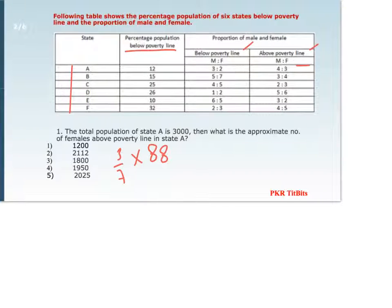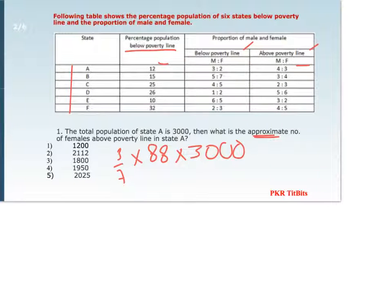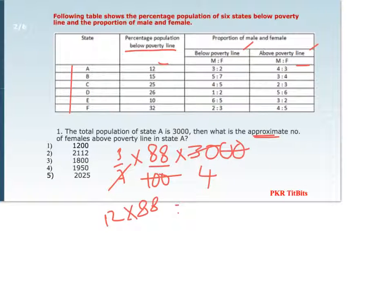This 88% we get from 100 minus 12%. So 88% of 3000. Since we want to calculate the approximate value, we take it as 88 divided by 100, removing two zeros. We approximate it, so it can be around 4 or 5. Now it is 12 into 88.